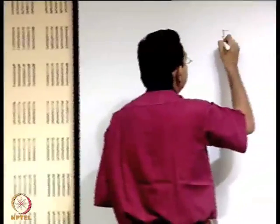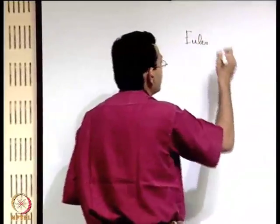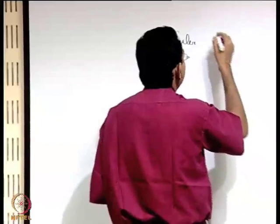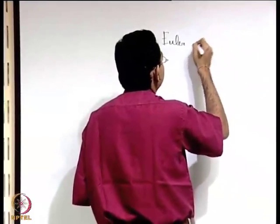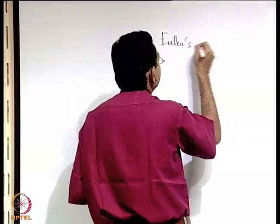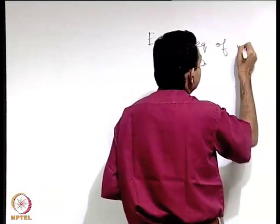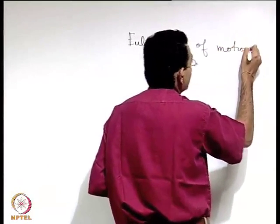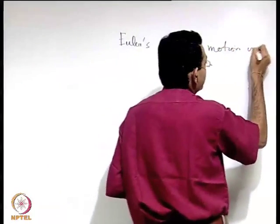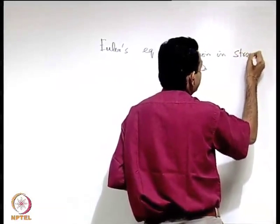We are now going to discuss the Euler's equation of motion in streamline coordinate system. We consider Euler's equation of motion in streamwise or streamline coordinates, continuing from the previous class.